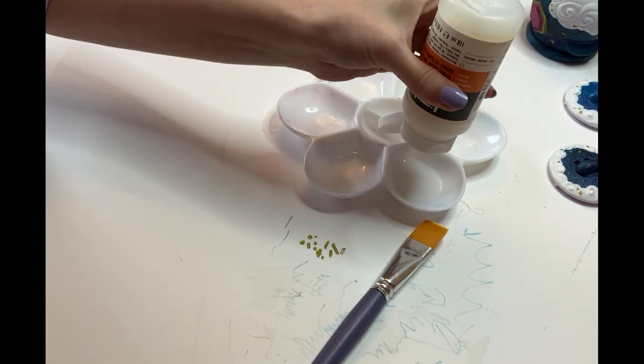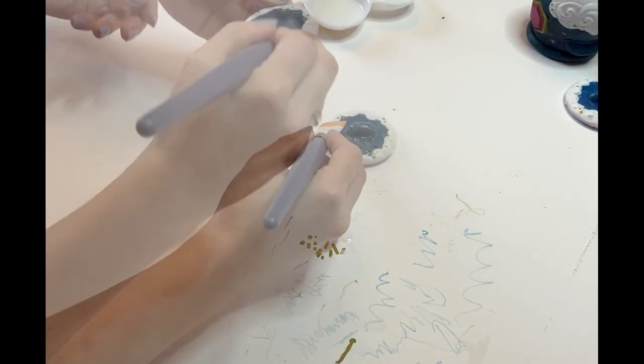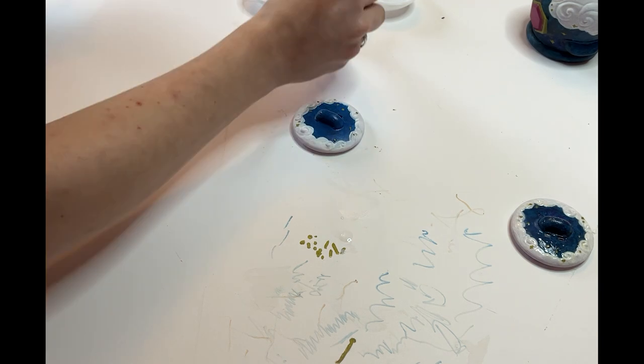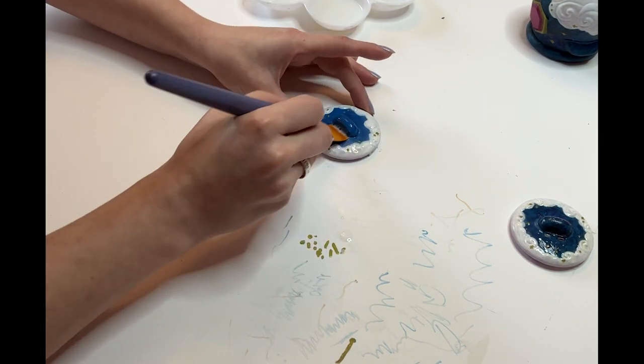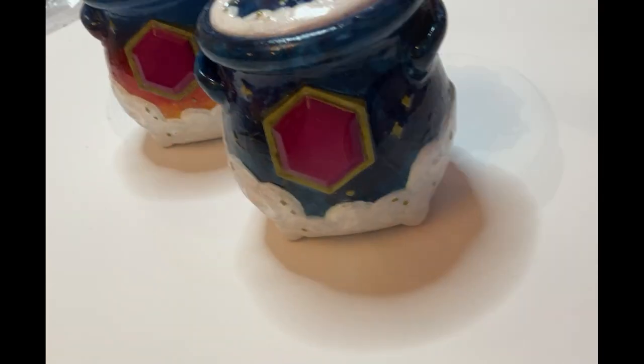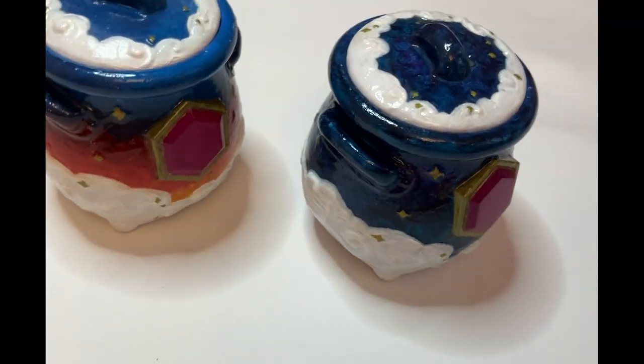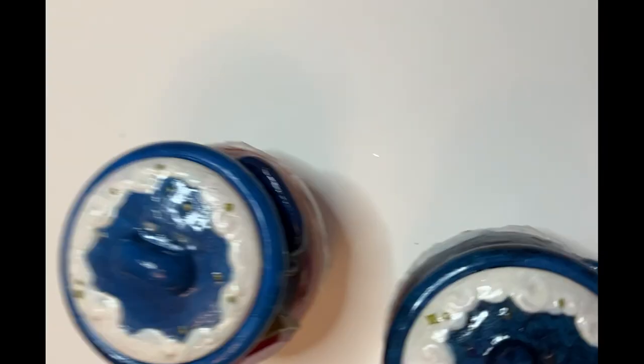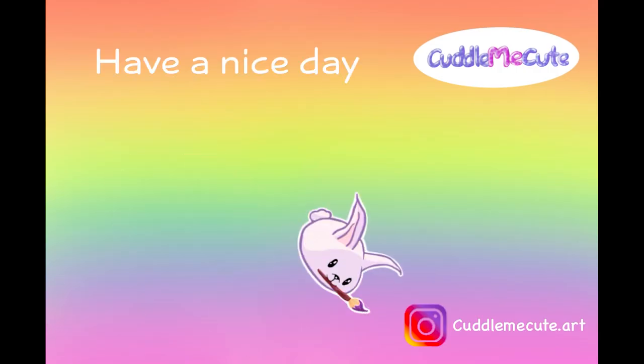Use a gloss varnish to protect the paint. I put this on the jewel too to make it extra shiny and used two coats to make sure it was all covered. I hope you all enjoyed this video as much as I had fun making it. Have a nice day.